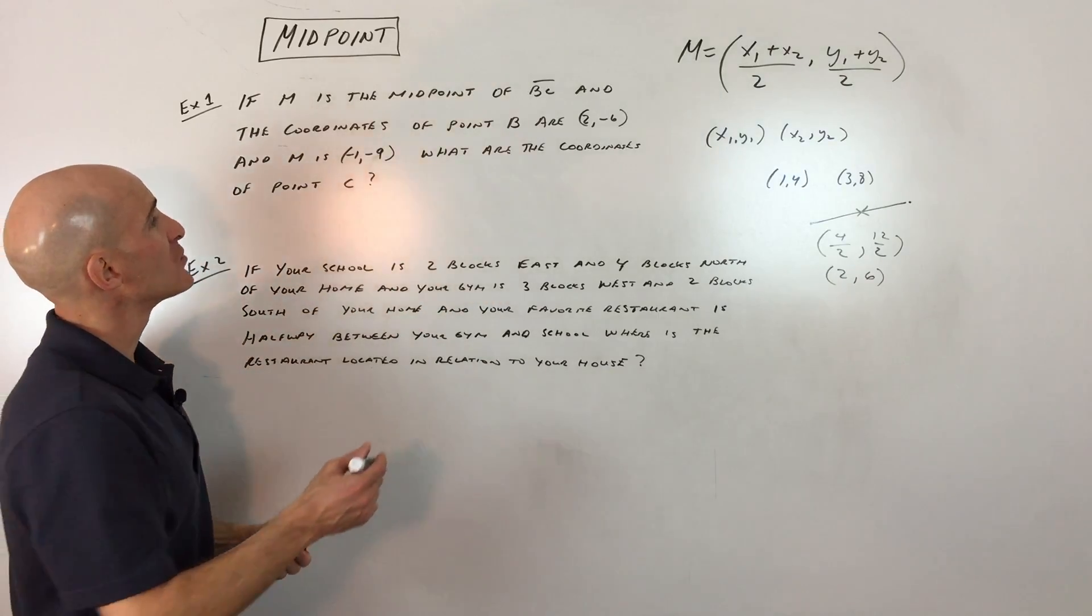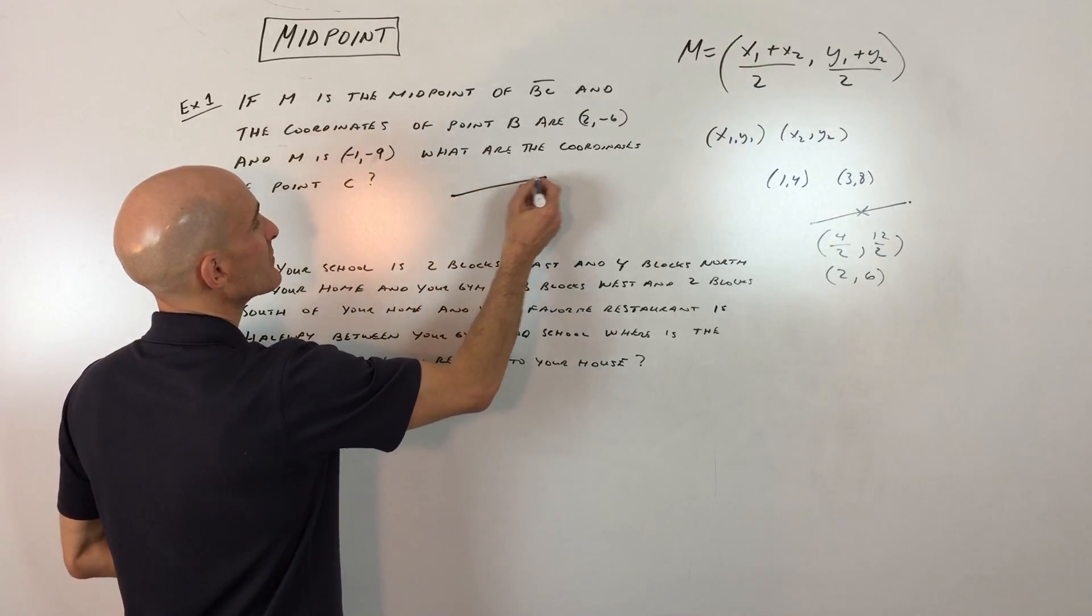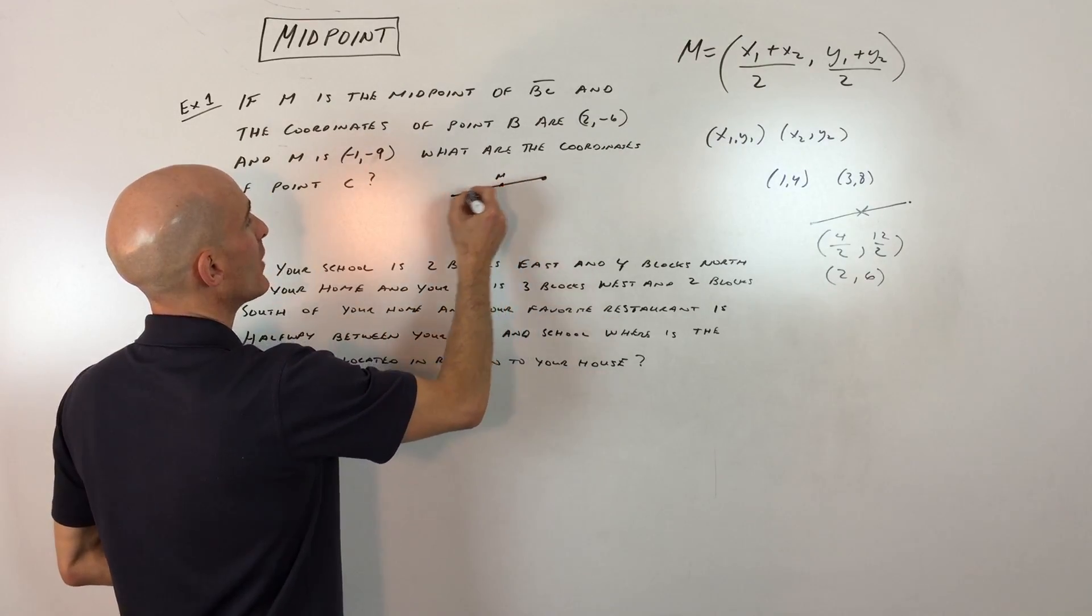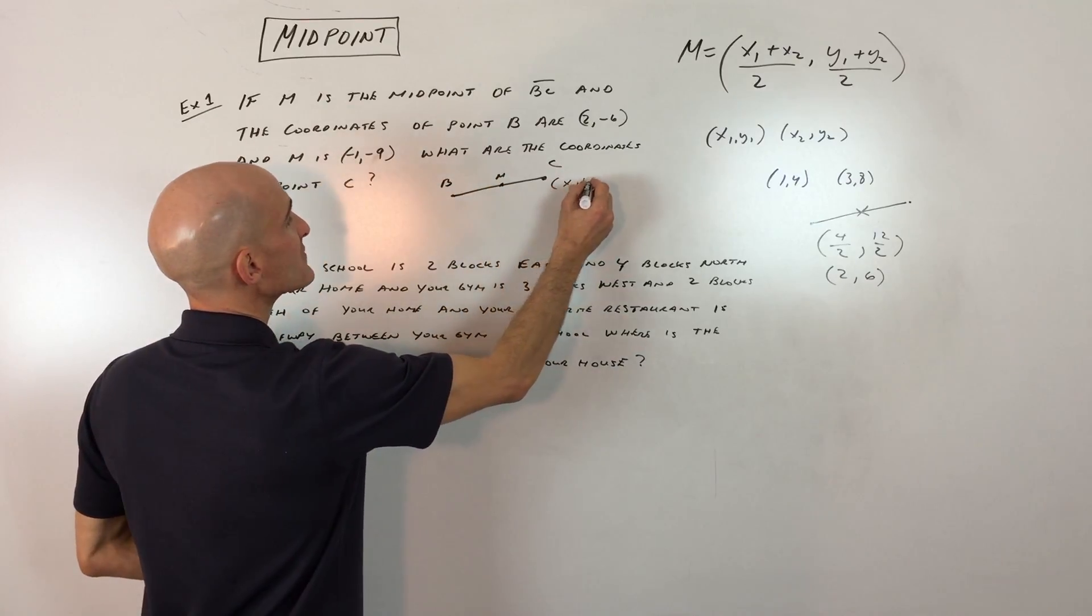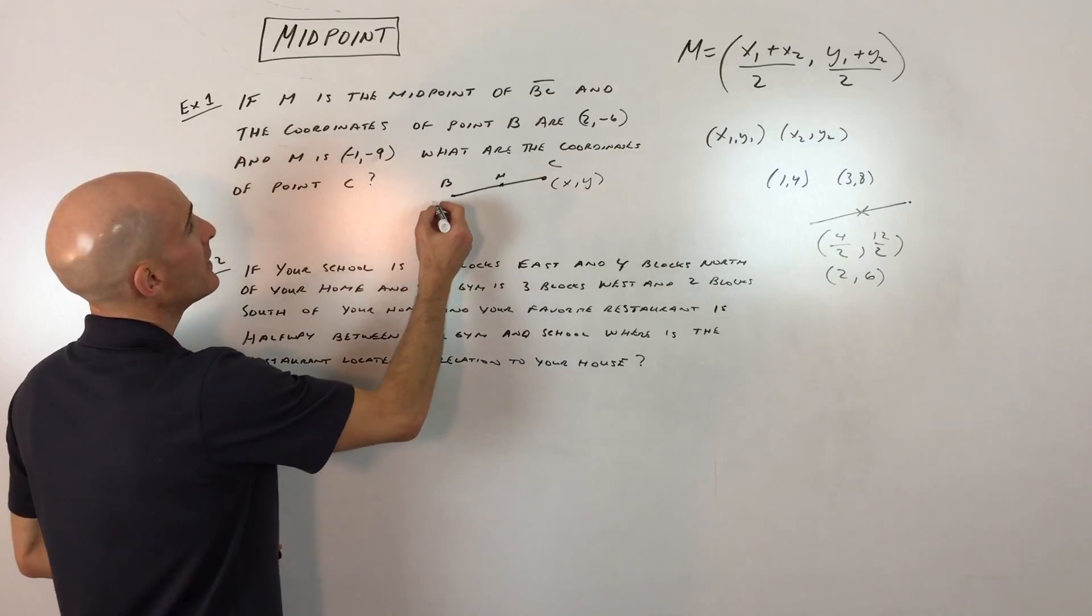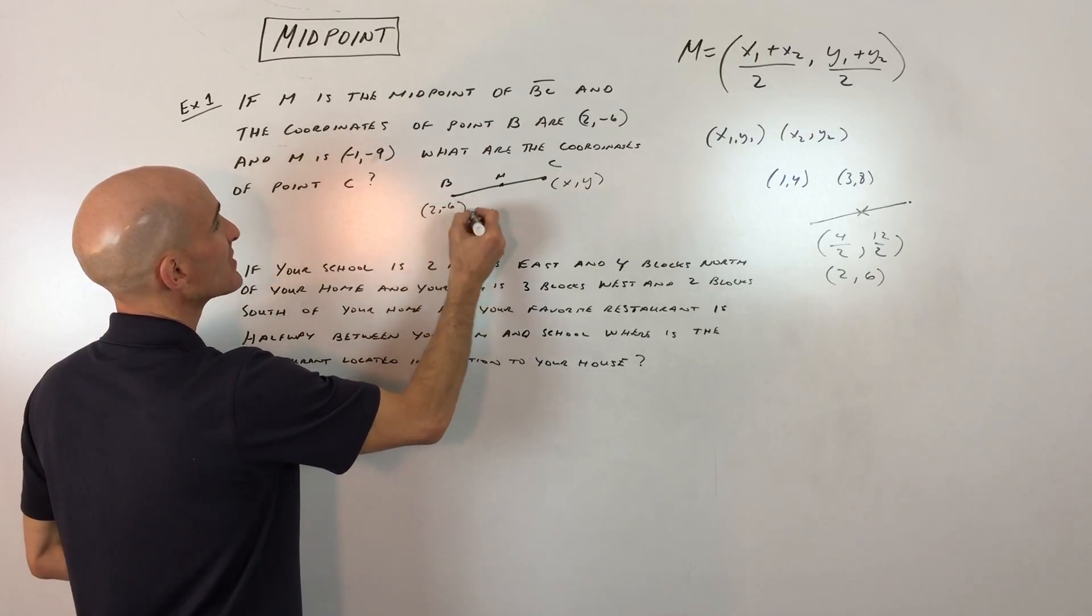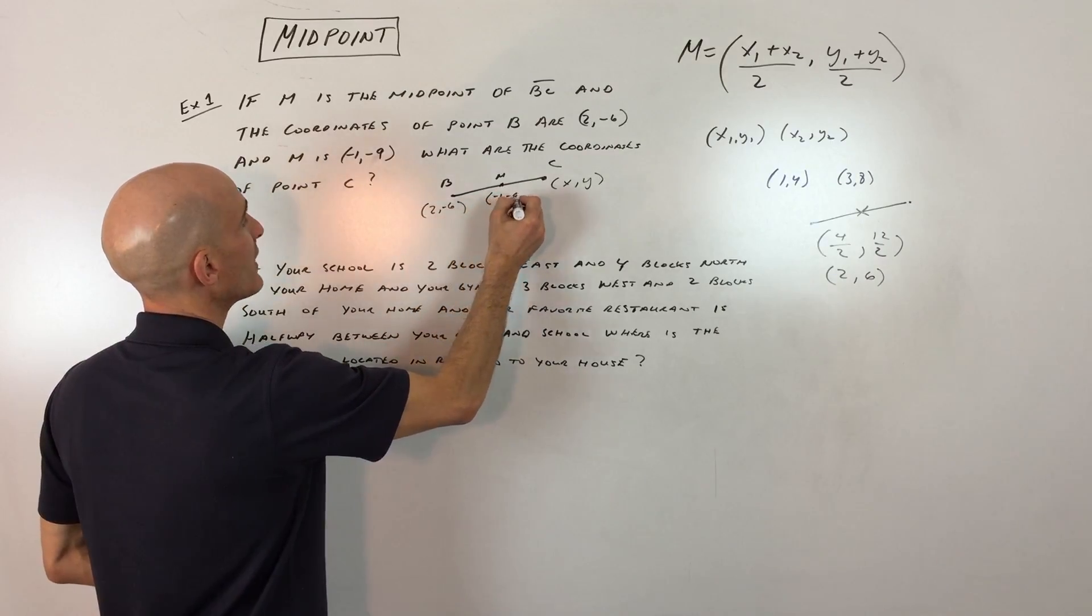The way I would do this is I would draw a diagram, something like this. Here's your midpoint, here's B, here's C. We don't know the coordinates of C, so let's call that XY. B, they tell us the coordinates are 2, negative 6, and the midpoint is negative 1, negative 9. Don't worry about this drawing being accurate as far as in the coordinate plane. This is just to help us visualize.